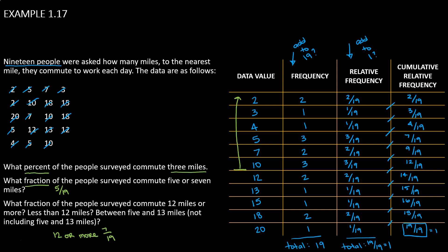Less than 12 miles, we can just look at the cumulative relative frequency. Again, we're asking for a fraction here, so we can copy that over. So less than 12 miles, there were 12 out of 19 who commute less than 12 miles.